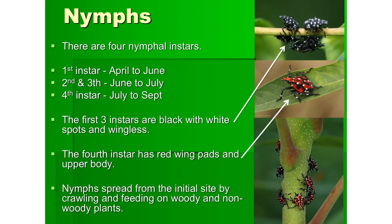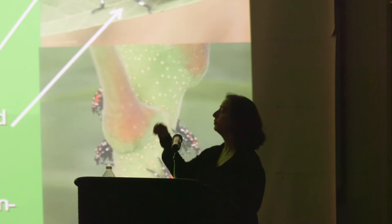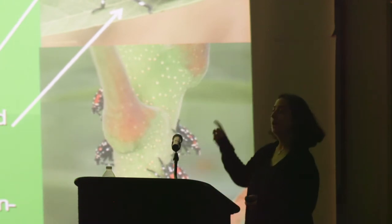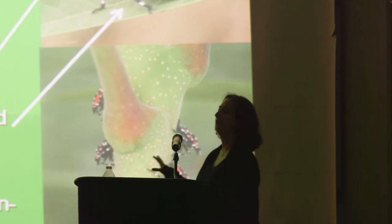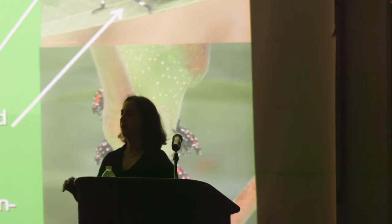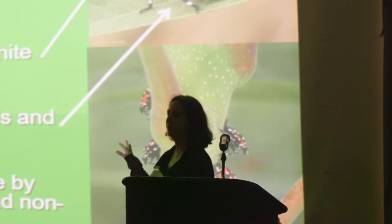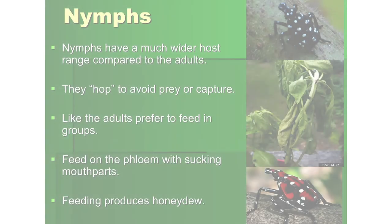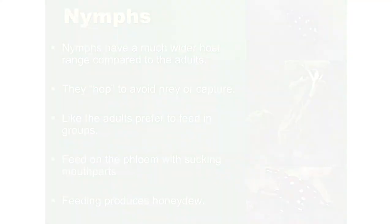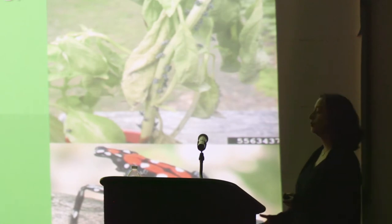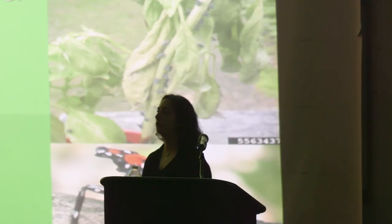The nymphs are what we'd see now this time of year. There are four instar stages. The first three are shiny black with white spots and get progressively larger through the season. The fourth instar has the red wing pads, the color changes, and they get a little bit larger. Then you have the adult. The nymphs feed on a lot more species of plants than the adults do. The adults settle into a smaller palette, but the nymphs are where you're doing really widespread damage. They're leaf hoppers — quite difficult to catch because they jump very far. They feed in the same way as the adult and produce excessive amounts of honeydew.